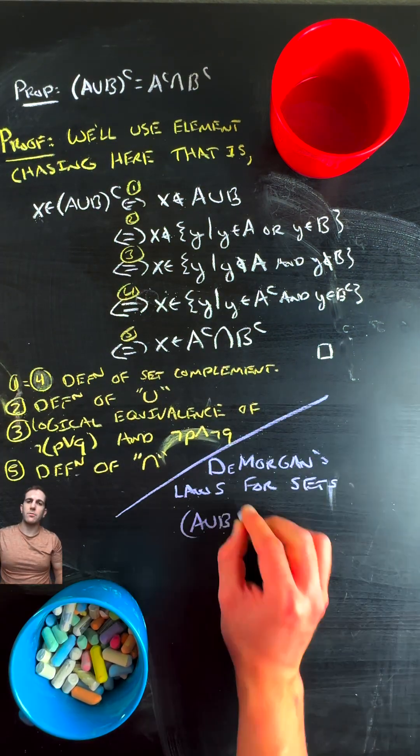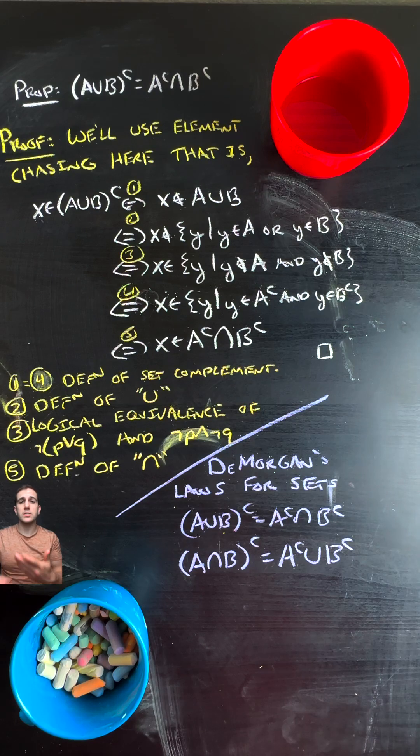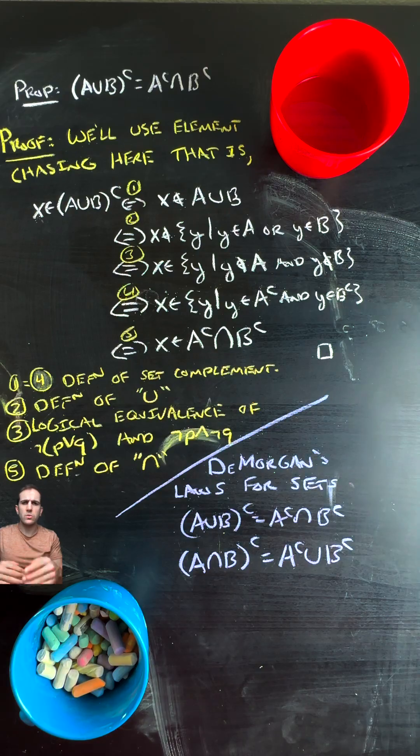This is one half of the collection of DeMorgan's Laws for sets, which I've also put up on board here, which are used everywhere.